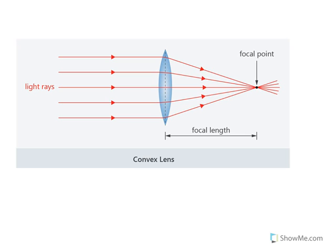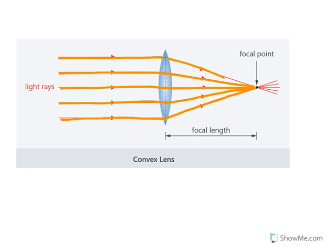Here is another picture of the convex lens. Rays that are parallel to the principal axis, after refraction, all meet at a point called the principal focus or focal point. The distance between the optical center and this focal point is called the focal length. Because this convex lens converges all rays of light, it is also called a converging lens.